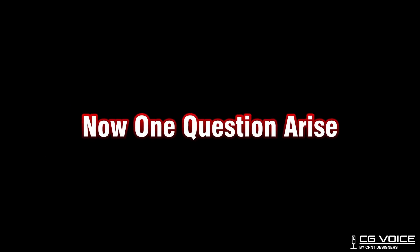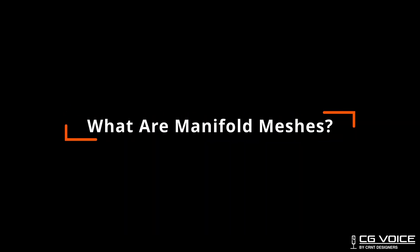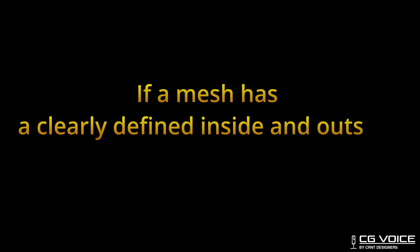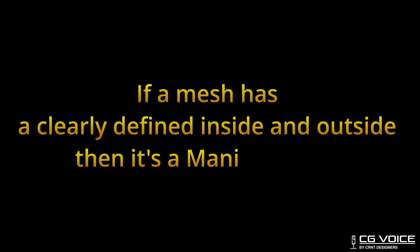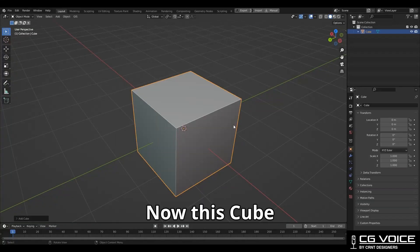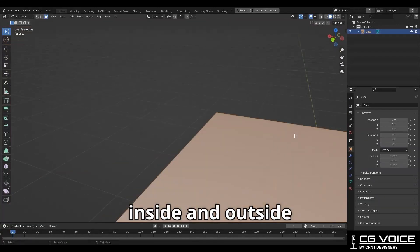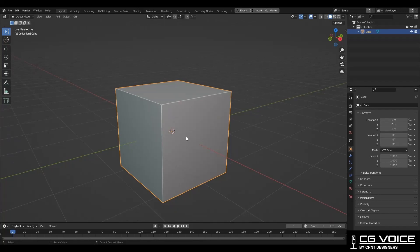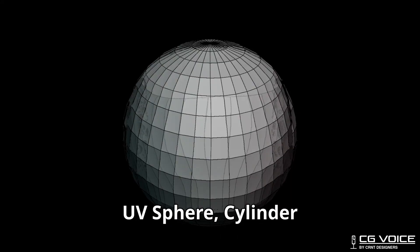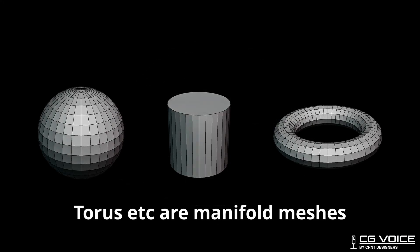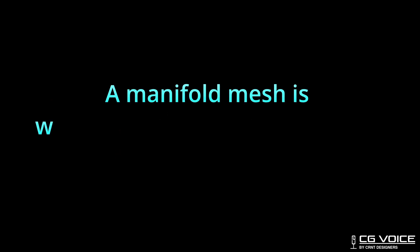Now one question arises: what are manifold meshes? If a mesh has a clearly defined inside and outside, then it's a manifold mesh. This cube has a clearly defined inside and outside, hence it's a manifold mesh. UV sphere, cylinder, torus, etc. are also manifold meshes.